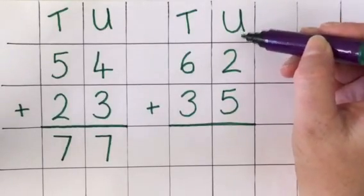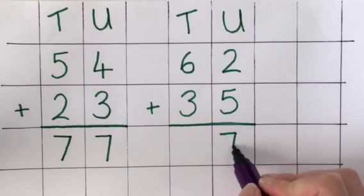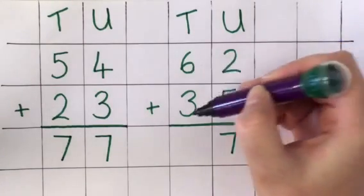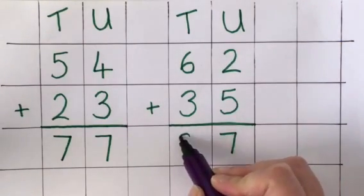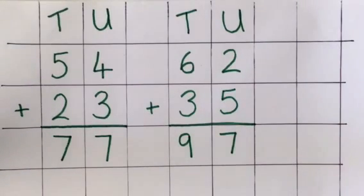Adding the units first. 2 units and 5 units is 7 units. 6 tens and 3 tens is 9 tens. So the answer is 97.